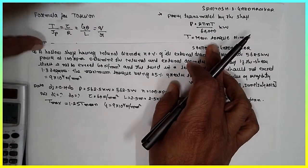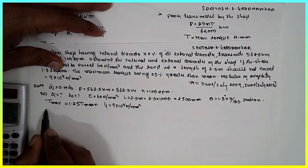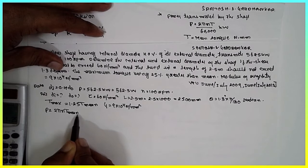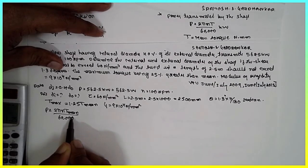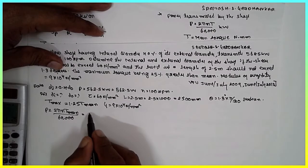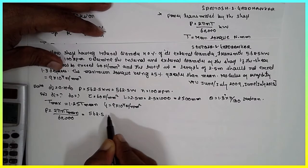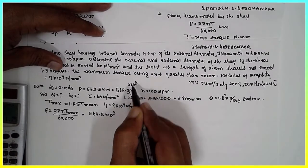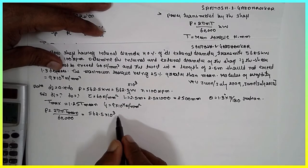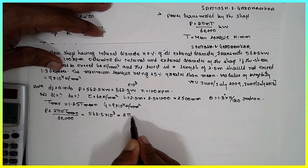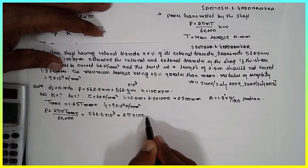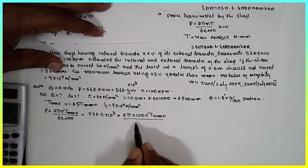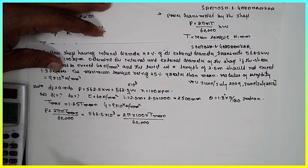First, find T_mean using the power formula: P = 2π N T_mean / 60,000. Substituting P = 562.5 × 10³ watts and N = 100 rpm.